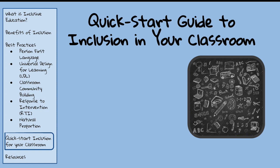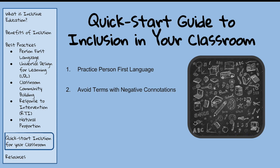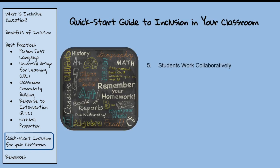A quick start guide for inclusion in your classroom. Use the following eight tips to start implementing inclusion. Number one, practice person-first language. Number two, avoid terms that project an unnecessarily negative connotation like deformed, poor, unfortunate, or victim. Number three, make supports and assistive technology available to all students, not just students with disabilities. This will lessen the isolation an individual using supports can feel and help all students be successful learners. Number four, think of barriers to learning and try to come up with alternatives to eliminate those barriers.